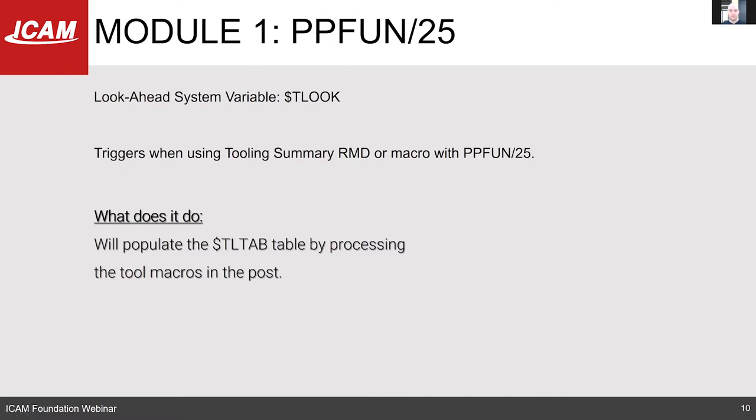For the PPFund 25, it uses the same system variable for lookahead as the tool lookahead: $Tlook. You can invoke it through the tooling summary RMD macro, or by manually inputting the PPFund 25. It looks at all the macros in the post that affect tooling and stores information inside of an array — up to 200 tools with 50 variables each. Twenty are already populated by the post processor, and you have 30 user-defined variables to store additional information not present in the CL source file.